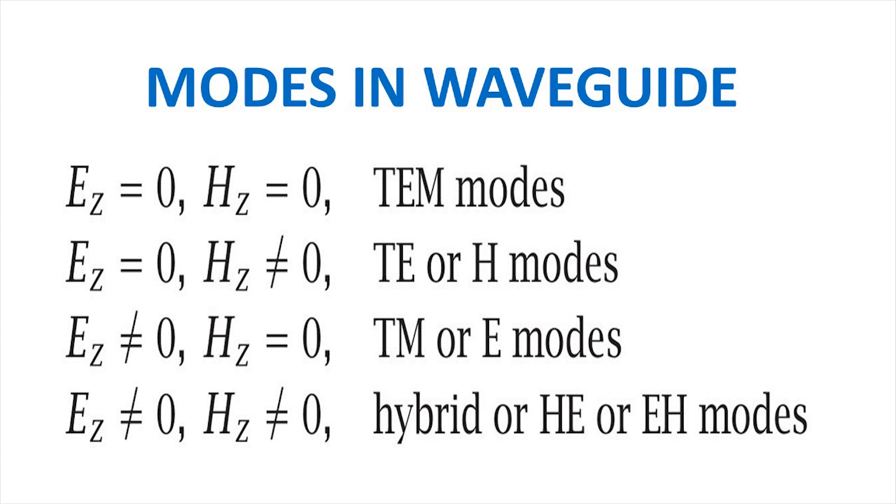Depending on values of Ez and Hz, modes are defined in a waveguide. When both Ez and Hz are zero, it is called TEM mode. If only Ez is zero, it is called TE, transverse electric mode. If only Hz is zero, it is called TM, transverse magnetic mode. When both are non-zero, it is called hybrid or HE mode.